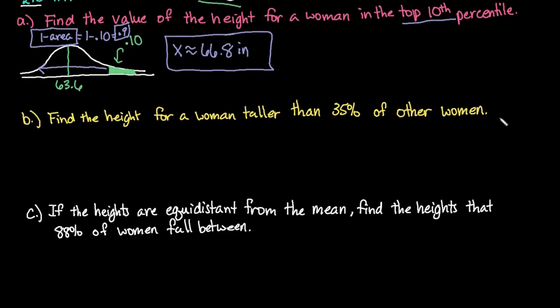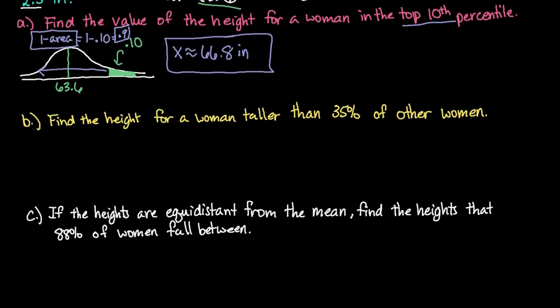Moving on to the next one. We want to find the height for a woman taller than 35% of other women. So we're still using the same mean. So our mean is still 63.6. And our standard deviation is still 2.5. So that's not going to change. What's going to change this time is where we have our shading.